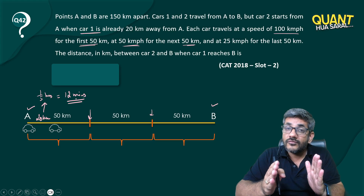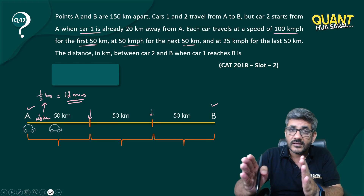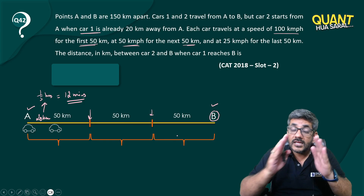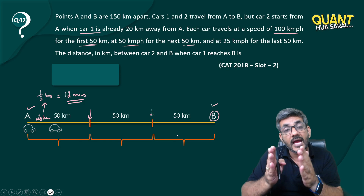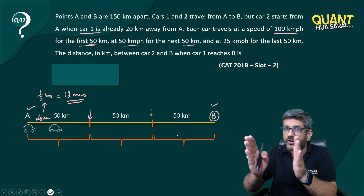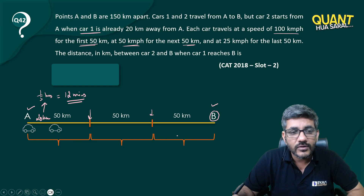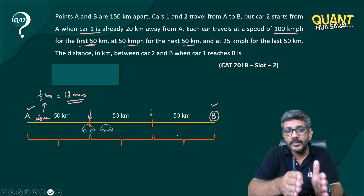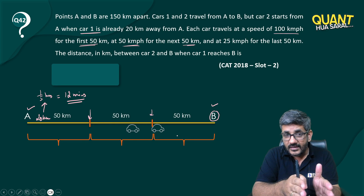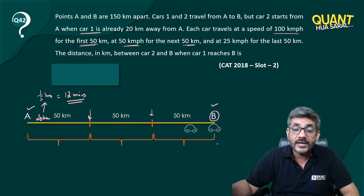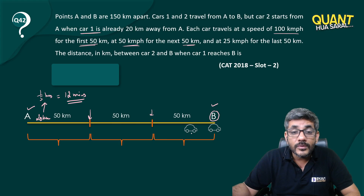Now when they are both moving in exactly the same fashion, car one will reach B and car two will also reach B — but at a gap of 12 minutes. If they initially started at a gap of 12 minutes, they would always move at a gap of 12 minutes. So finally, they would also reach B at a gap of 12 minutes, as you can see they are running at exactly the same gap in terms of time.